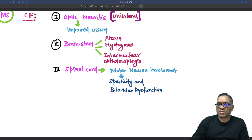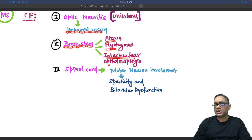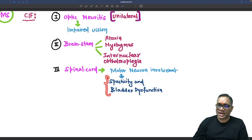What are the clinical findings? Three important triads: First, optic neuritis which is unilateral with impaired vision. Second, brainstem findings including ataxia, nystagmus, and internuclear ophthalmoplegia. Third, spinal cord motor neuron involvement reflected as spasticity or bladder dysfunction.